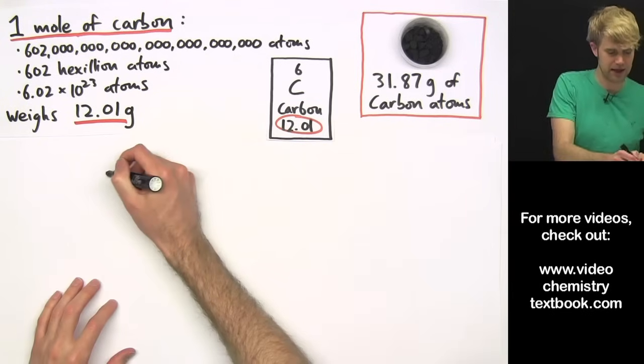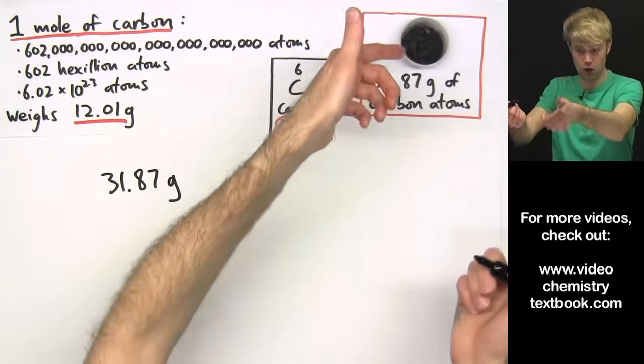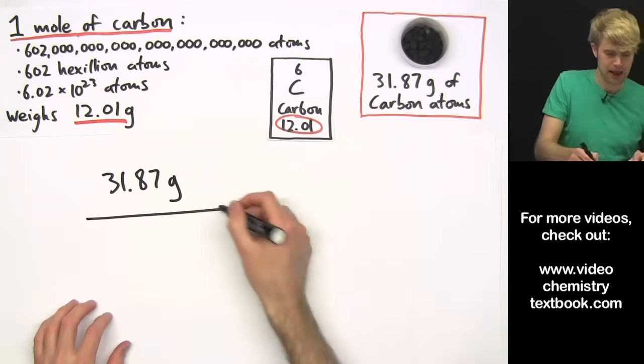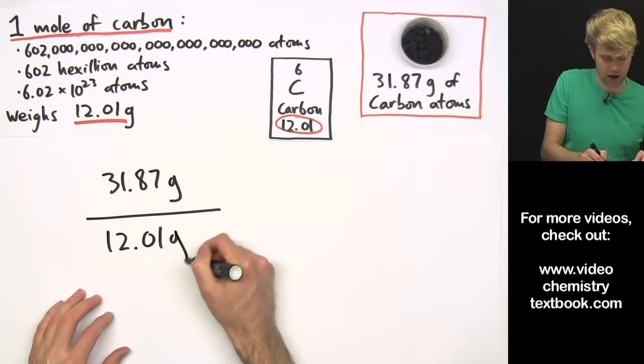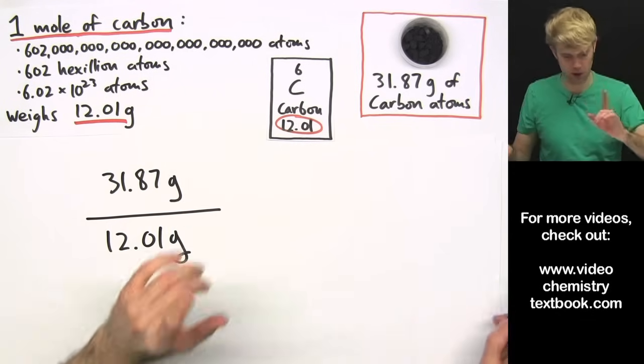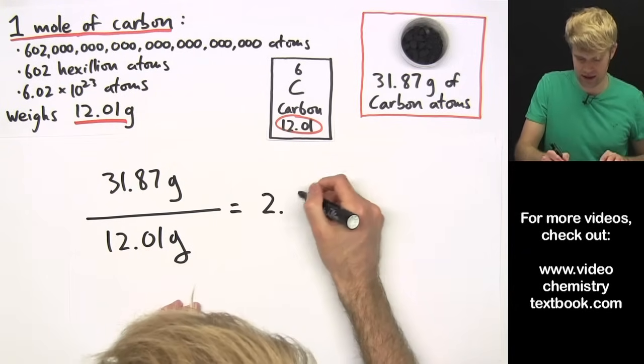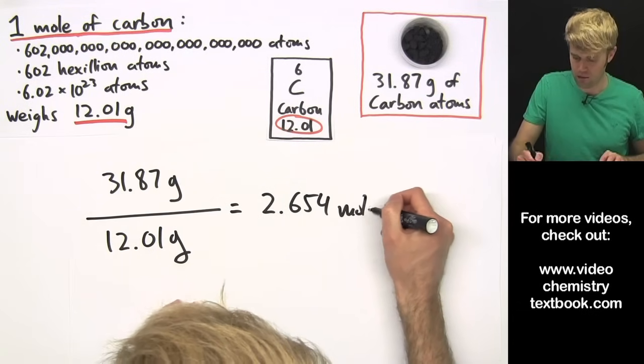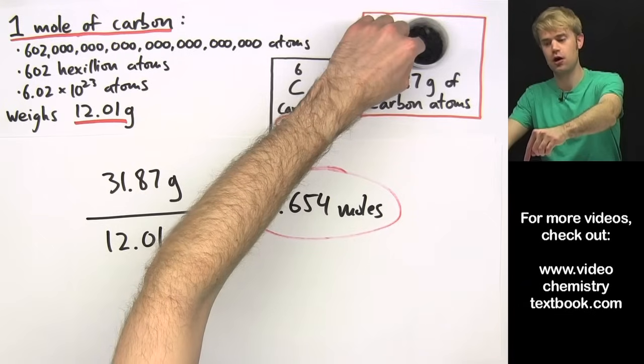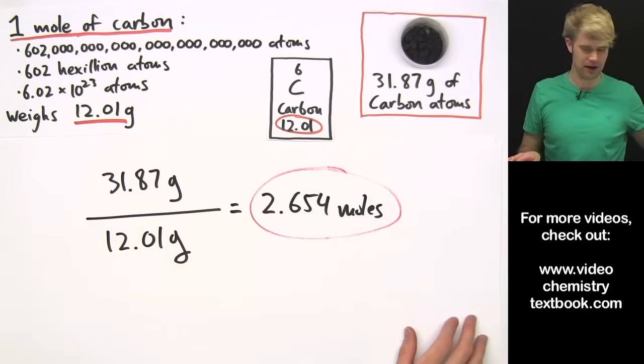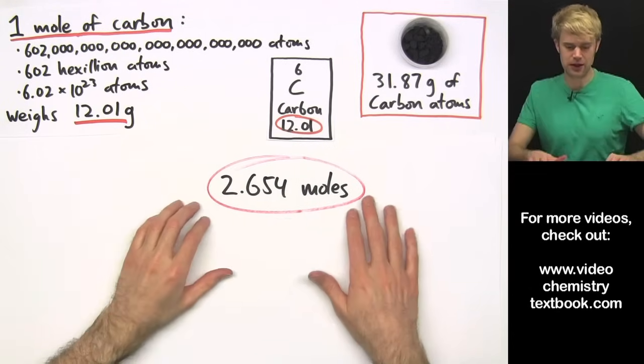Now, that's more than a mole. If we had 12.01 grams of carbon, we'd have one mole. But we have more than that. So let's figure out how many total moles we have. We'll do that by taking 31.87 grams, the total mass of carbon atoms here, and divide that by 12.01 grams, which is how much one mole weighs. And when we do that, we get 2.654 moles. So that is how many moles of carbon I have in here.